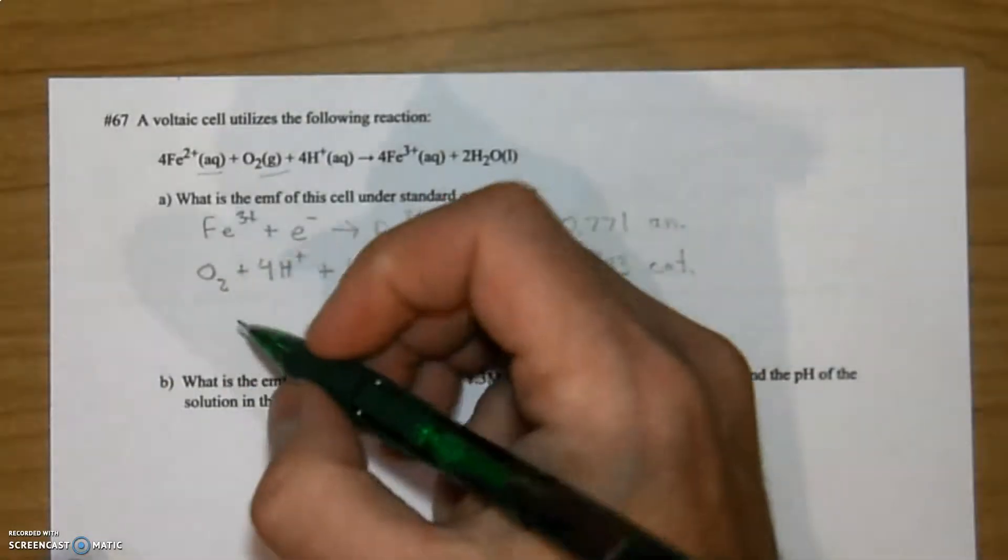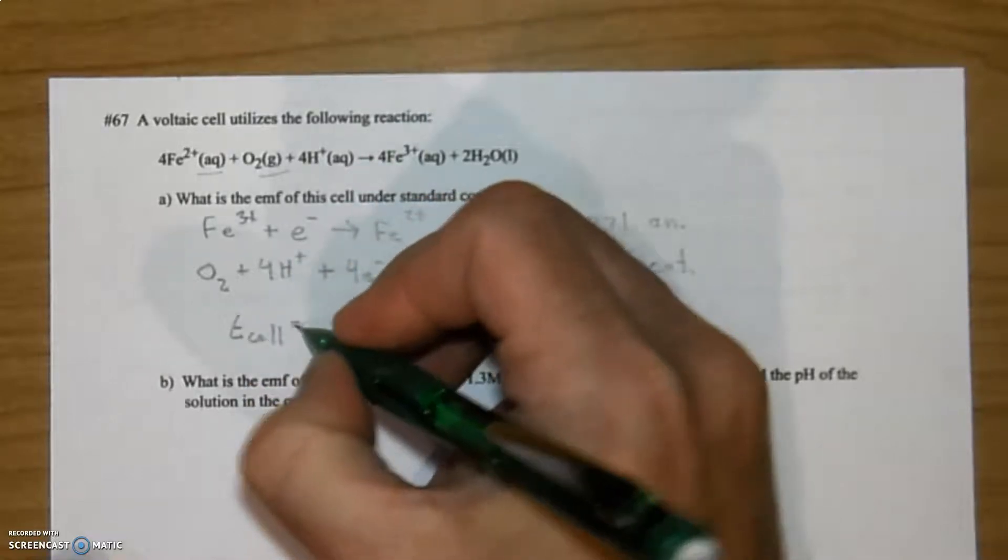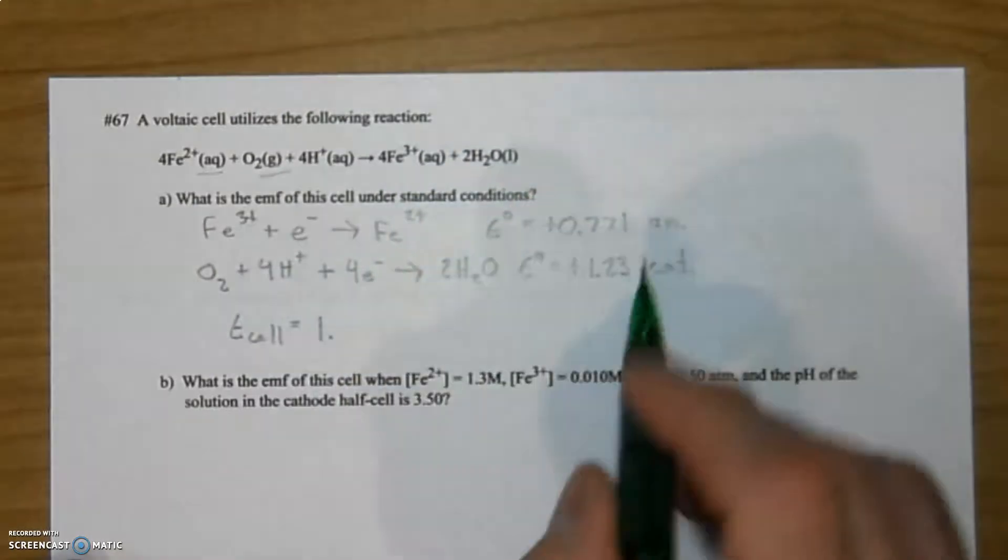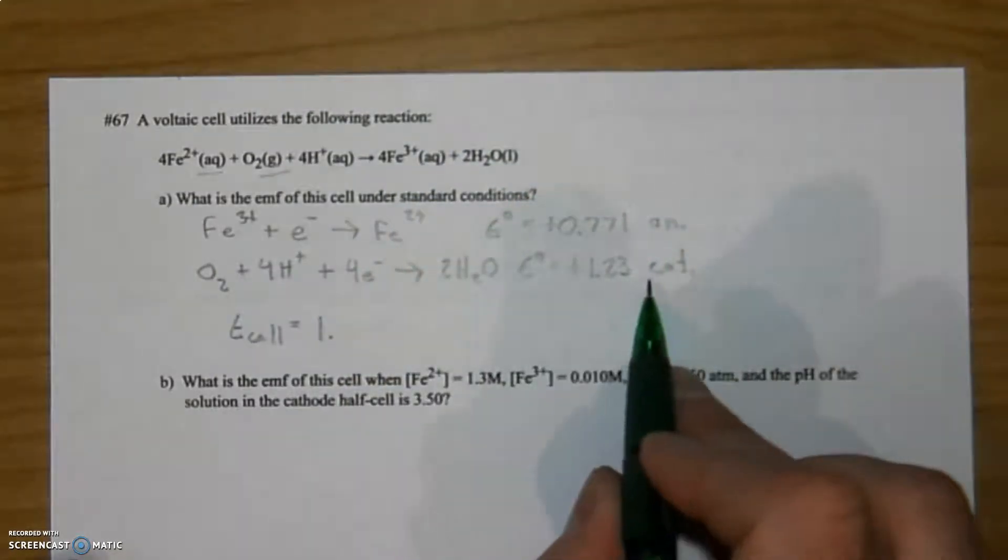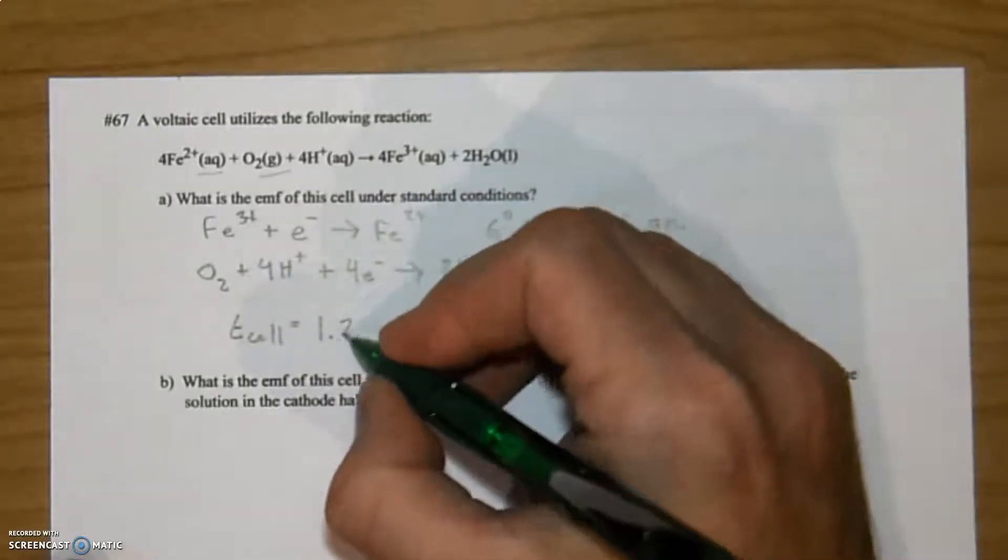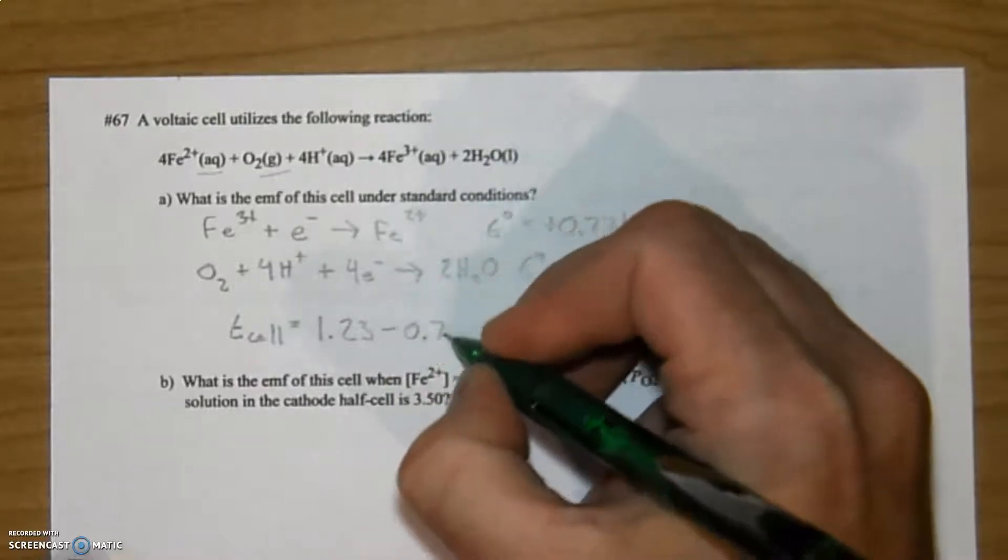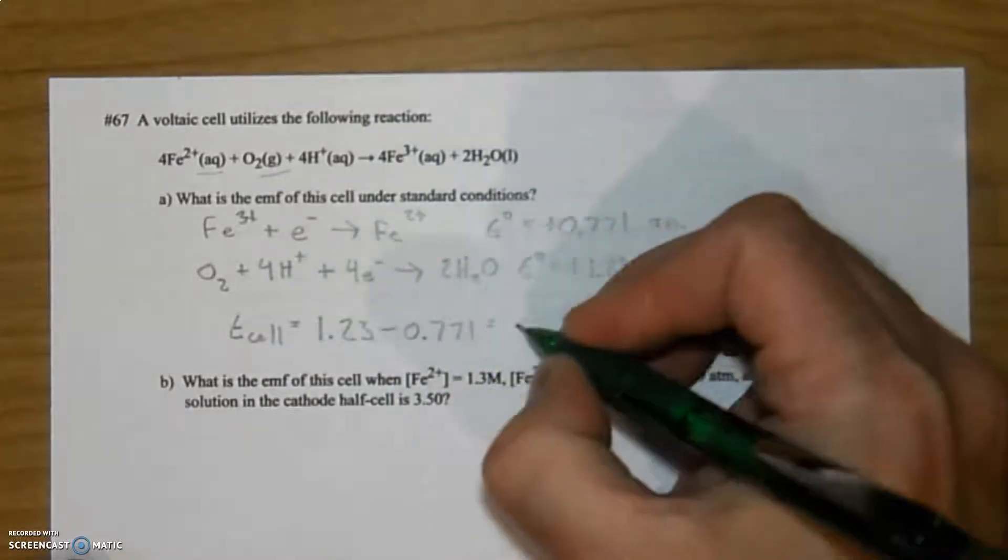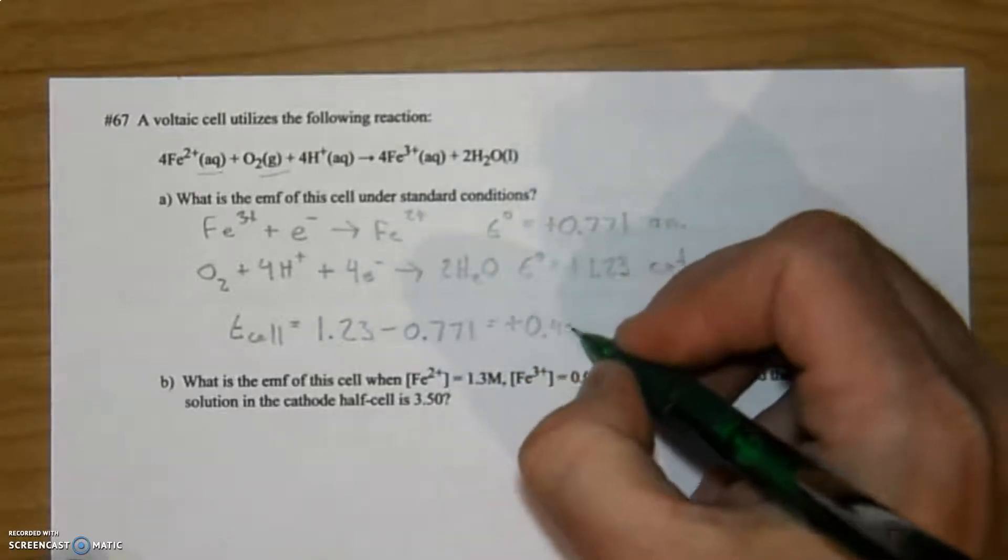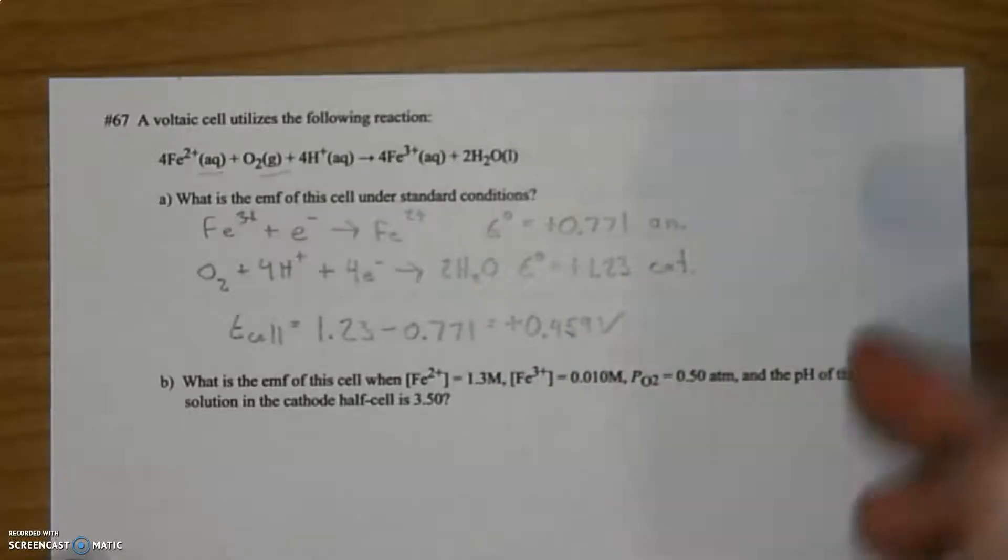So if I want to get the cell potential for this, it's going to be the positive. If it's spontaneous it always needs to be the more positive value first, otherwise it's going to be negative and that's not spontaneous. So 1.23 minus 0.771 is equal to positive 0.459 volts. There it is. That's the write-up for it.